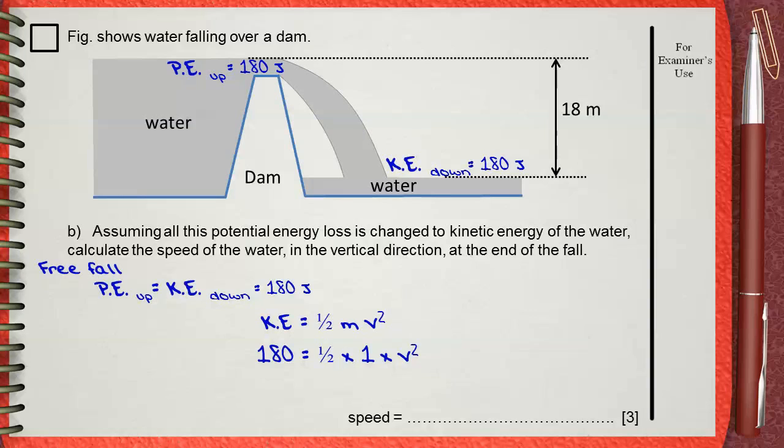Now we want to calculate v. Rearranging this equation, you will see that v squared equals 360. By taking the root of both sides, you will see that the speed equals 19 meters per second.